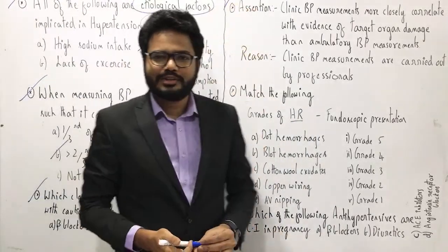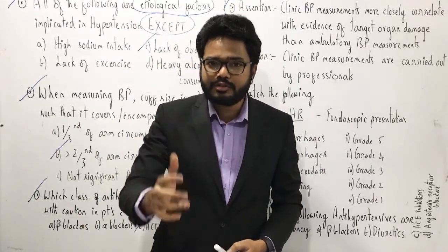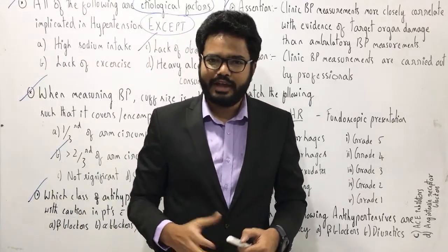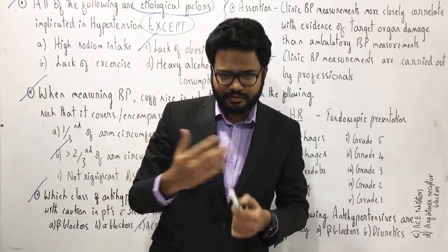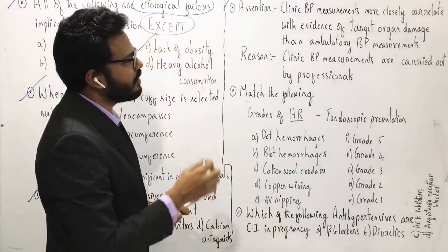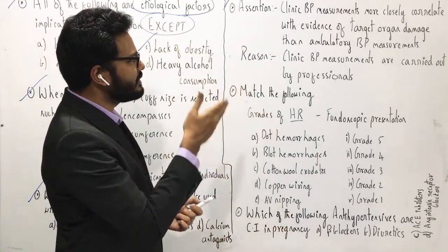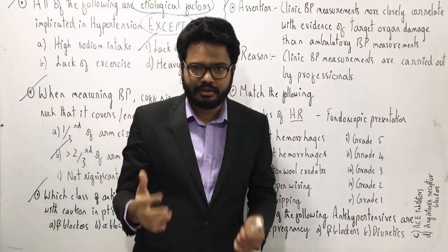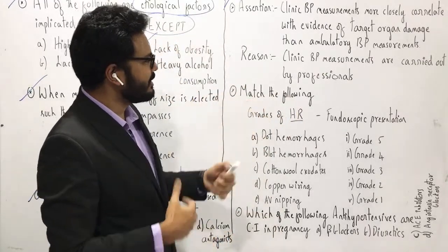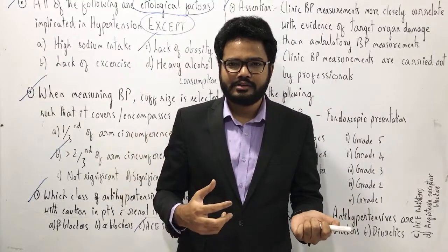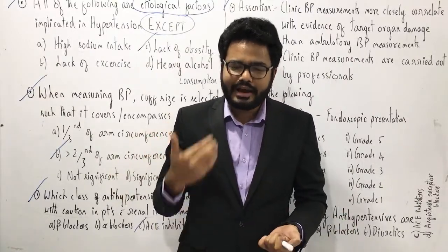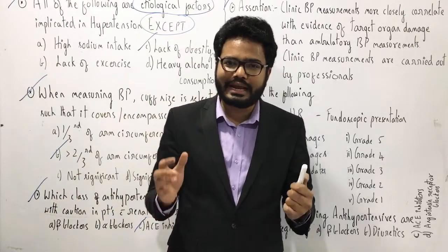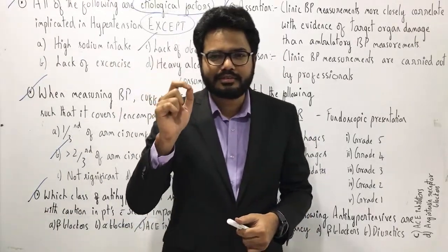Now, assertion and reason. Go through the scan very carefully and let me know whether both statements are true or false. Also, let me know if reason justifies assertion. Assertion states that clinic blood pressure measurements are more closely correlated with the evidence of target organ damage than ambulatory blood pressure measurements. Reason, clinic blood pressure measurements are carried out by professionals, either nurses or doctors. So obviously, the readings which we get are more accurate.